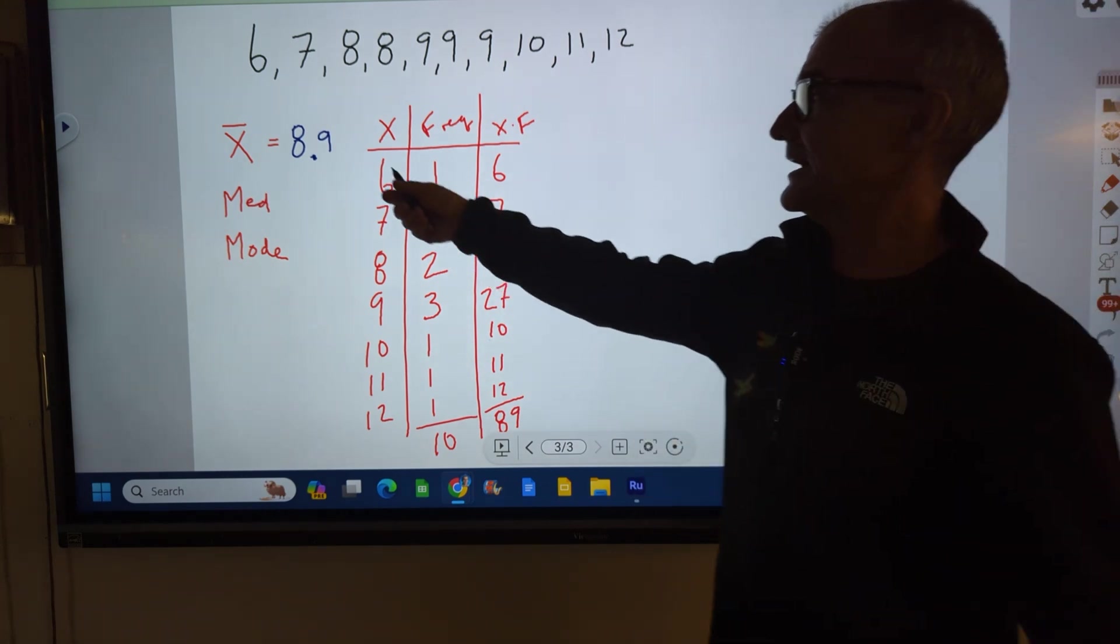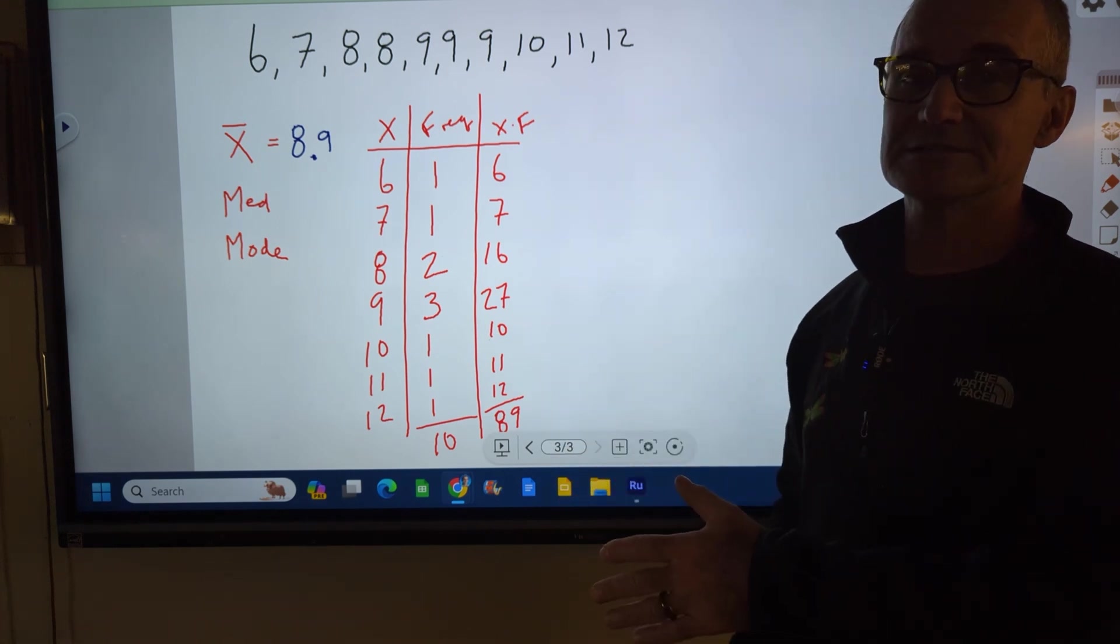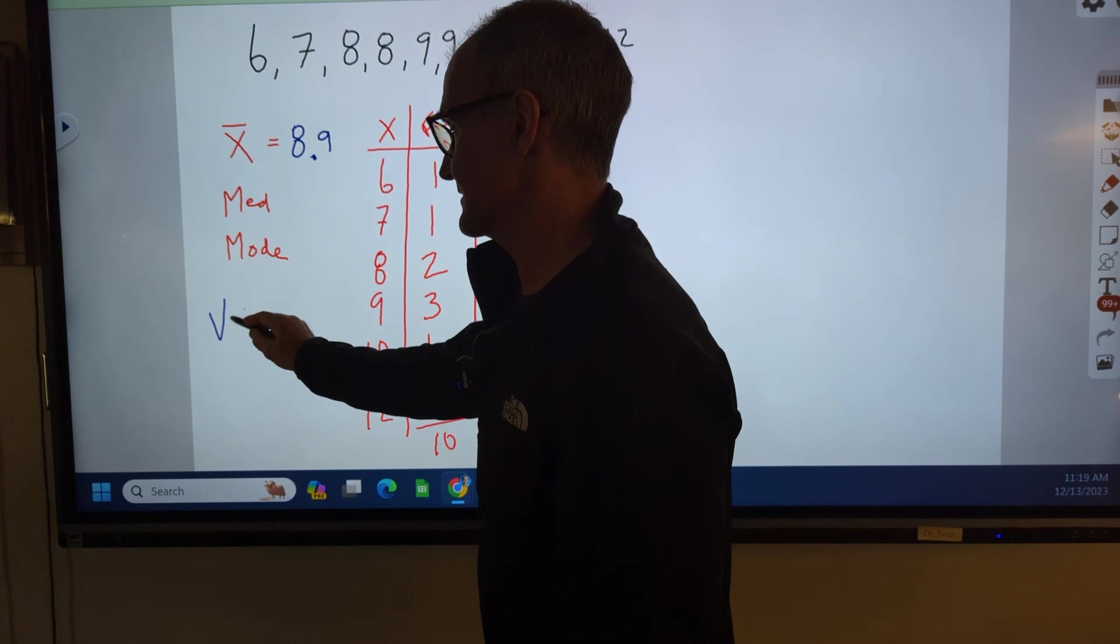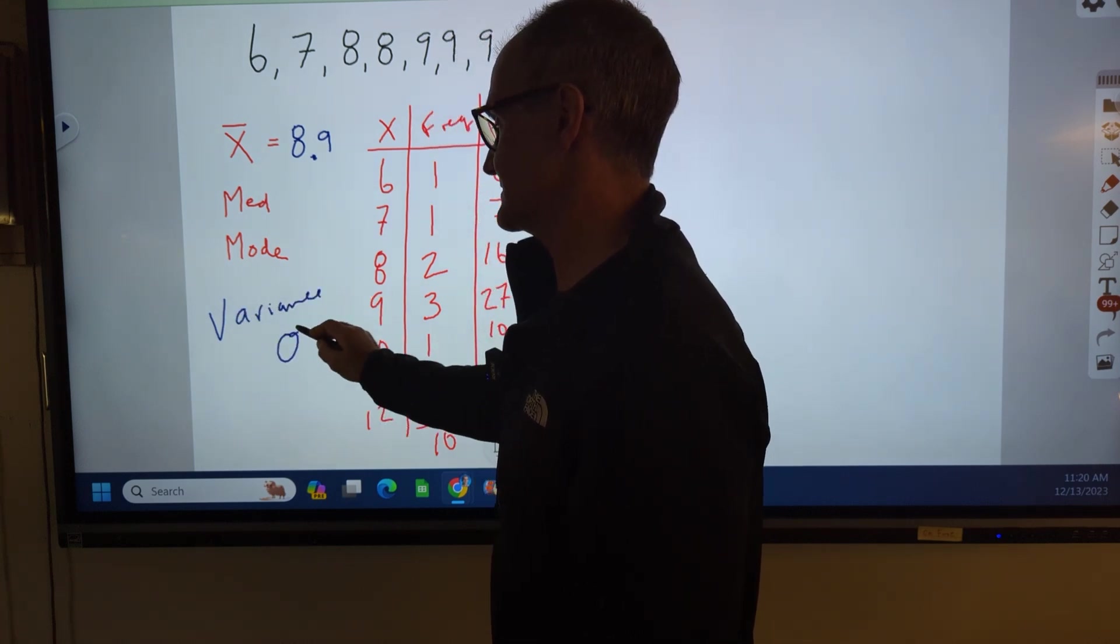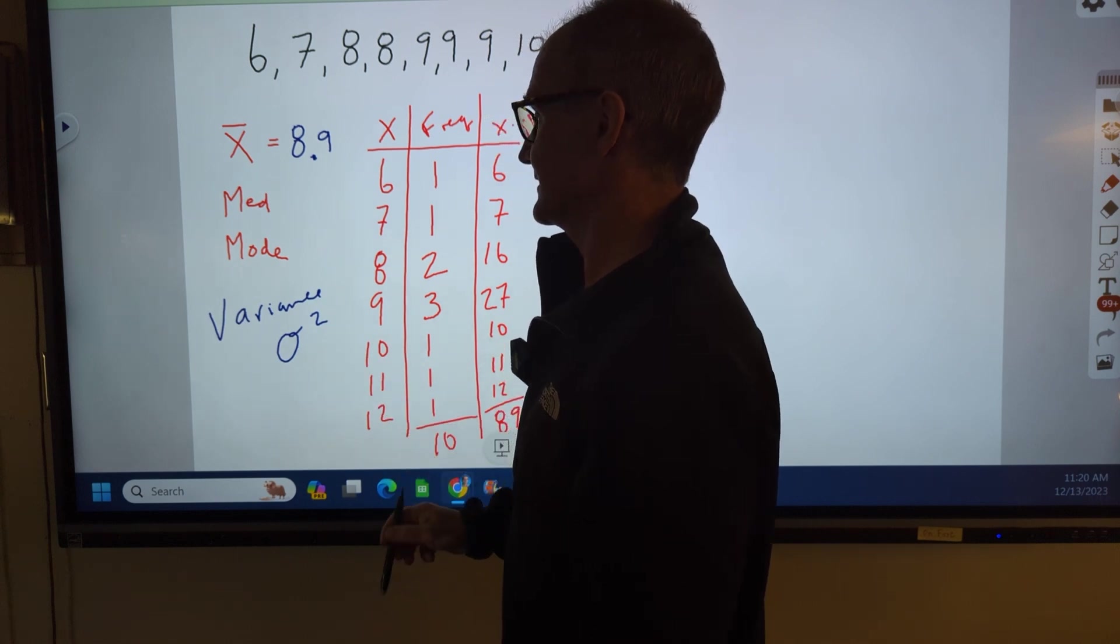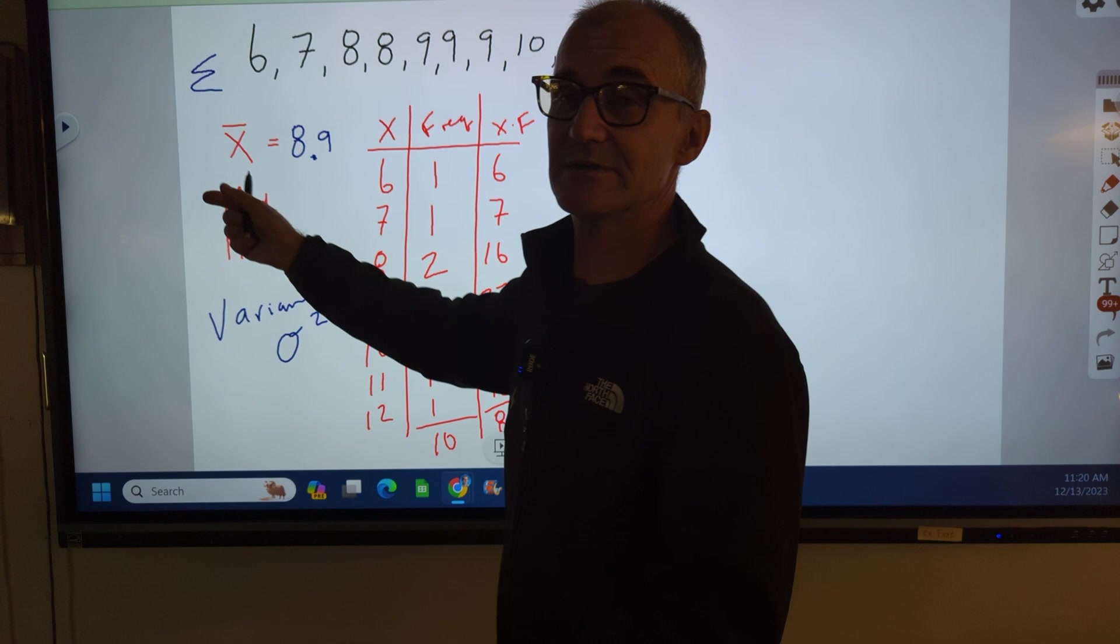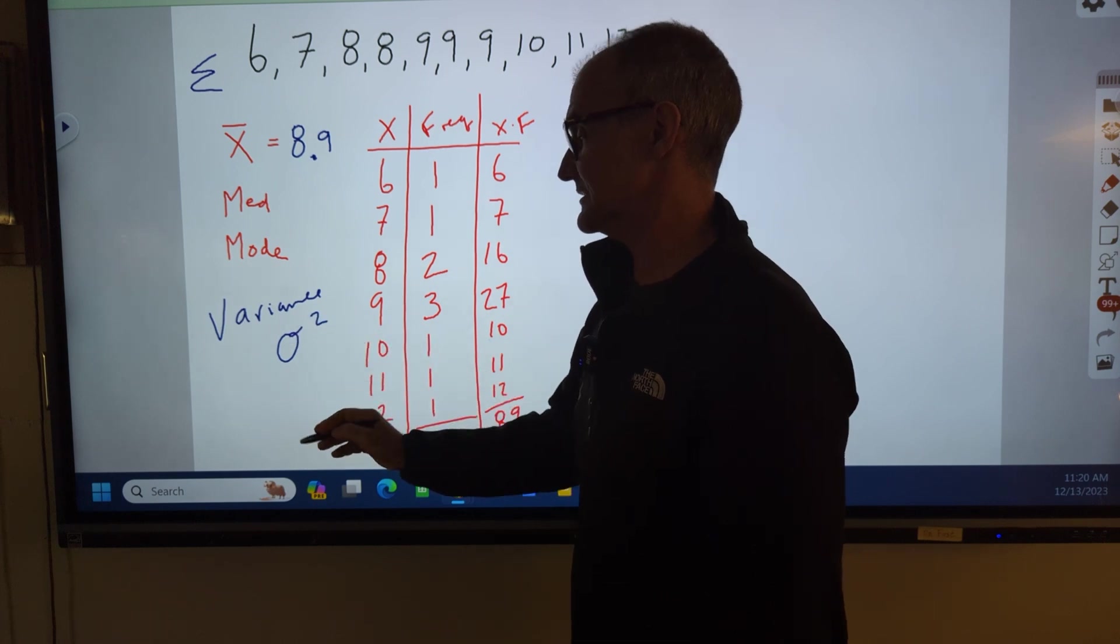Okay, I cleaned the board up. I wrote my average down here. We're not going to use the median or mode. Now we're going to find the variance and the standard deviation. Notation for variance: variance is a lowercase sigma squared. This right here is a Greek letter sigma. That's a capital sigma, it means add the column up. This is a lowercase sigma, and sigma squared is variance.